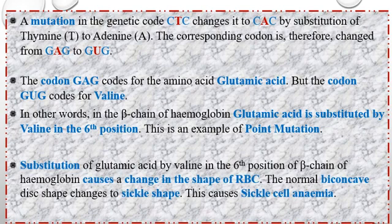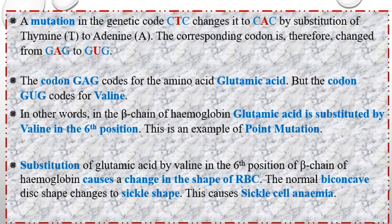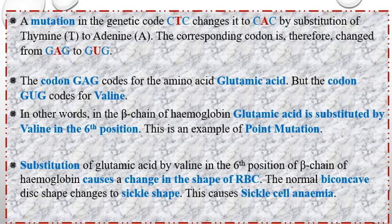The substitution of glutamic acid by valine at the 6th position of the beta chain of hemoglobin causes a change in the shape of RBC. Normal RBC has a biconcave disc shape, but in sickle cell anemia persons, the RBC appears sickle-shaped under a microscope. This is why it is called sickle cell anemia, and it is a genetic disorder.